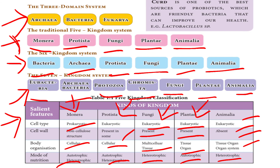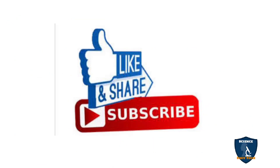These are the main characteristics of the five-kingdom classification — classified into Monera, Protista, Fungi, Plants, and Animals based on cell type, cell wall, body organization, and mode of nutrition. Thank you for watching. If you like the video, give a thumbs up, post doubts in the comment box, and subscribe to Science Easy Tech Show.